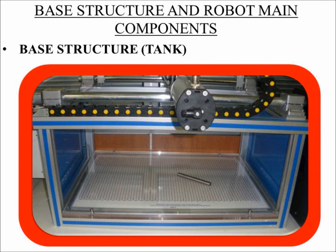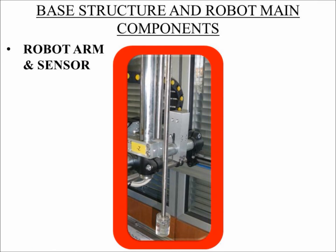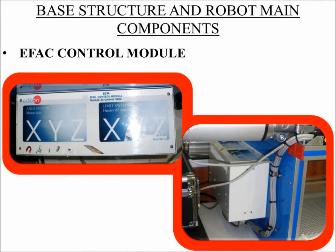The base structure is also where the actual experiment is performed. The robot arm is controlled by the stepping motors and, thanks to the sensor that is attached to it, is able to scan the area of space measuring the intensity of the waves in equidistant points. The effect control module has all control of the robot — its speed and positioning — through the computer, which is also connected with the control module. This creates a bridge between the robot and the computer.